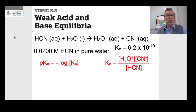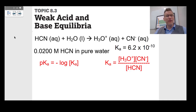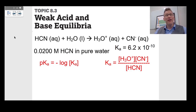Let's move on to topic 8.3, which is weak acids and base equilibria. This deals with Brønsted-Lowry acids and bases. If strong Arrhenius acids dissociate 100%, weak acids and weak bases will barely dissociate. Take a look at HCN — this is a weak acid. The HCN donates the H+ to water, giving H₃O+ as the conjugate acid and CN− as the conjugate base. The Ka is 6.2×10⁻¹⁰. The equilibrium expression on your equation sheet: Ka equals H₃O+ times CN− over HCN.